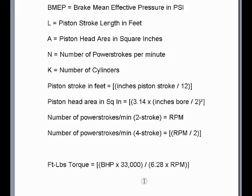To find foot-pounds torque, you need the brake horsepower and the RPM. Take one quantity of brake horsepower times 33,000, then divide by 6.28 times RPM. The value 6.28 represents one full 360-degree rotation of the crankshaft measured in radians — since 180 degrees equals pi (3.14), two pi equals 6.28 radians. Many formulas use 2 pi; 6.28 is the same thing.